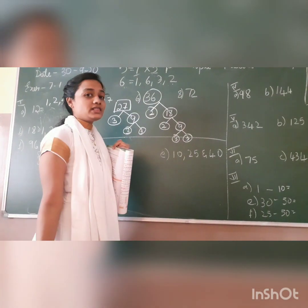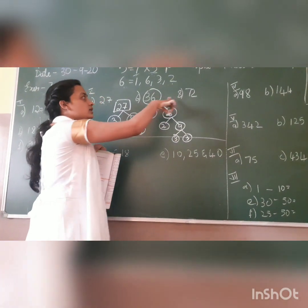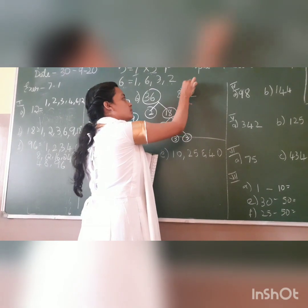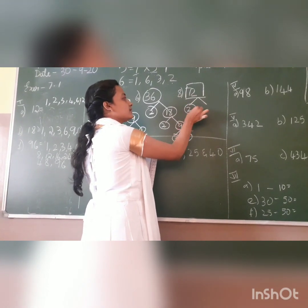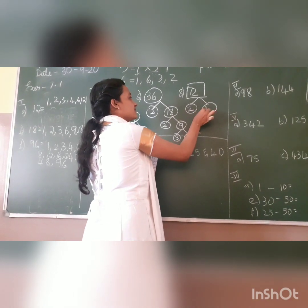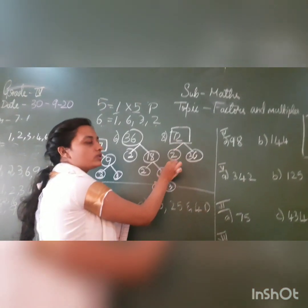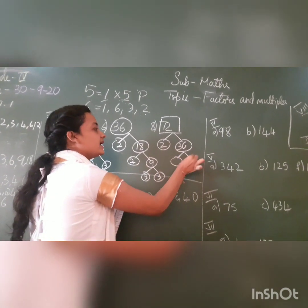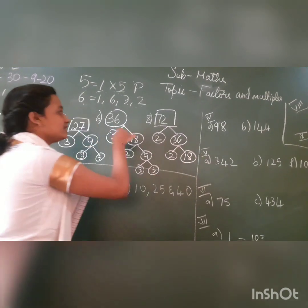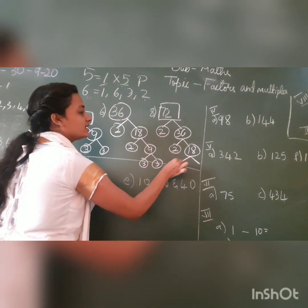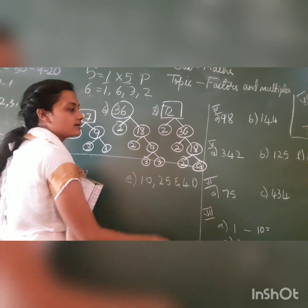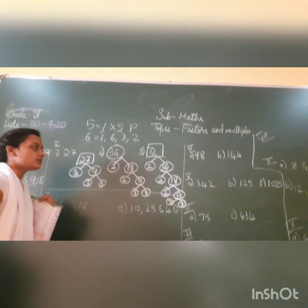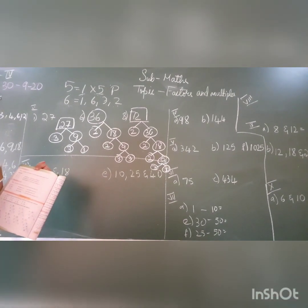Now I'm doing the 8th question: 72. Divide with 2: 2 × 36 = 72. Divide 36 further with 2: 2 × 18 = 36. Further: 2 × 9 = 18. Then 3 × 3 = 9. So the prime factors of 72 are 2, 2, 2, 3, and 3. I have solved 3 sums; the other sums you should work out and show me in the textbook.